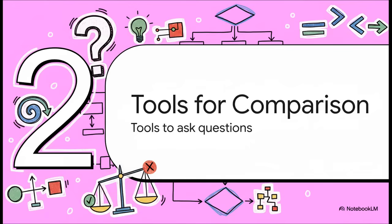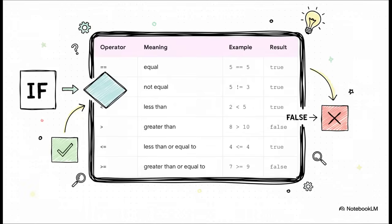Okay, so we know the computer only speaks true and false. But how do we actually get it to give us one of those answers? Well, simple. We have to ask it a question. And to ask those questions, we need a special set of tools. We call them comparison operators. These might look a little like math symbols from school, but just think of them as simple, direct questions.